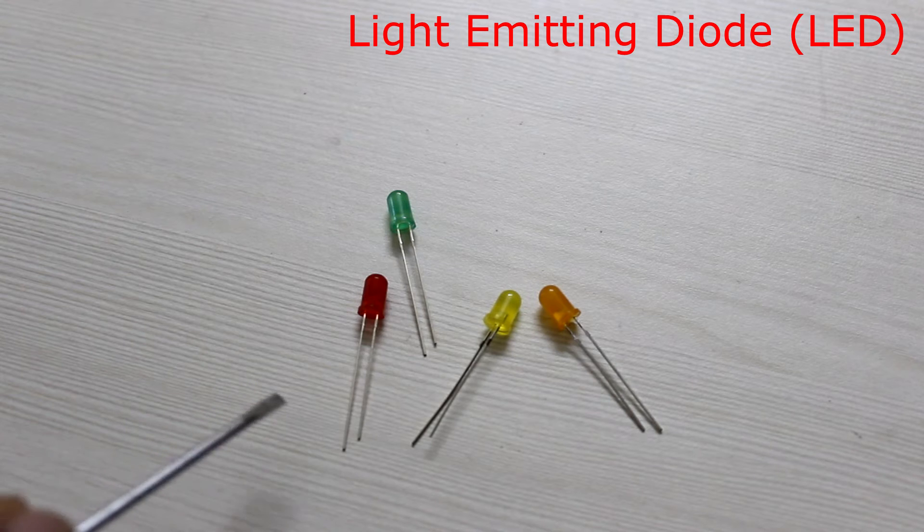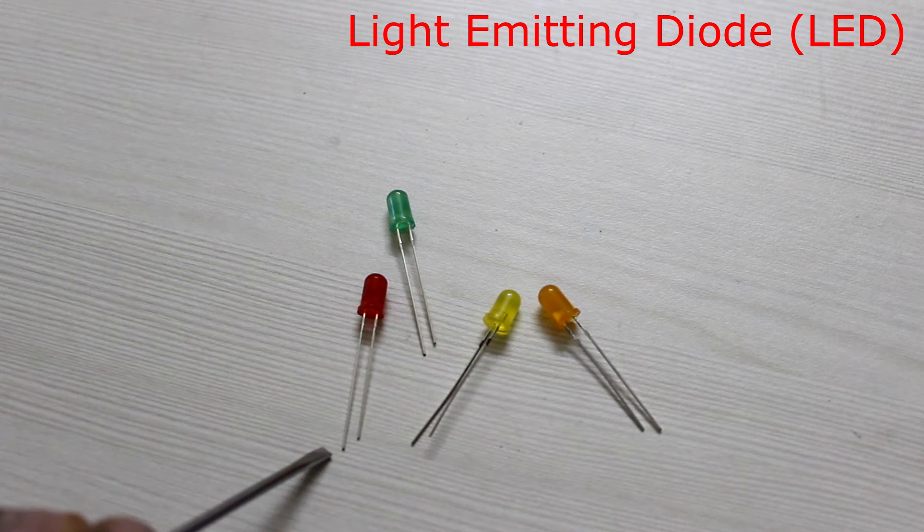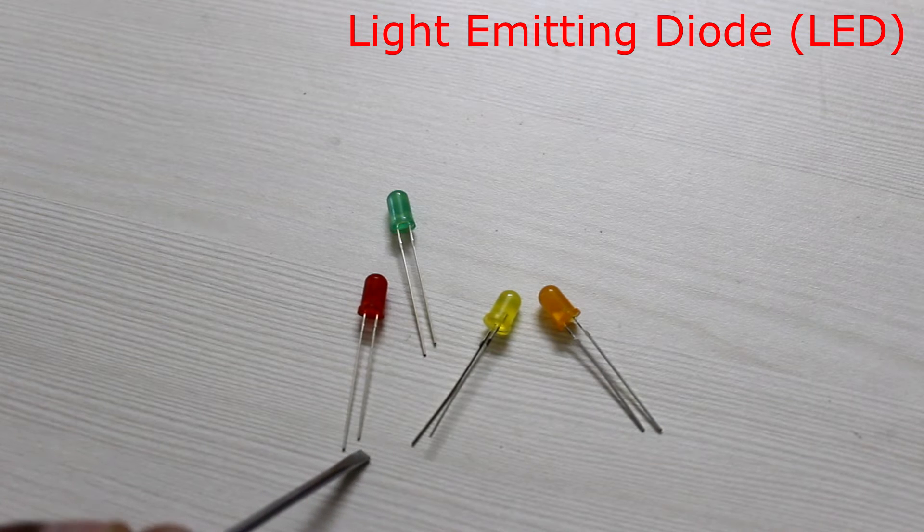LEDs glow when current passes through them. The longer pin corresponds to the anode which connects to the positive terminal and the shorter to the cathode which connects to the negative.